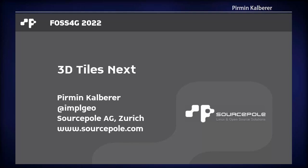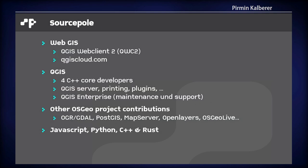My topic is about 3D Tiles Next, which is a new 3D tiles format. I'm working for SourcePole, a company located in Switzerland. We're doing web mapping, mostly 2D but also 3D, and that's what this talk is about, but also QGIS on the desktop and many other things. The T-Rex vector tile server mentioned before is a 2D tile format — you can do 2.5D there — but this topic is about real 3D objects.